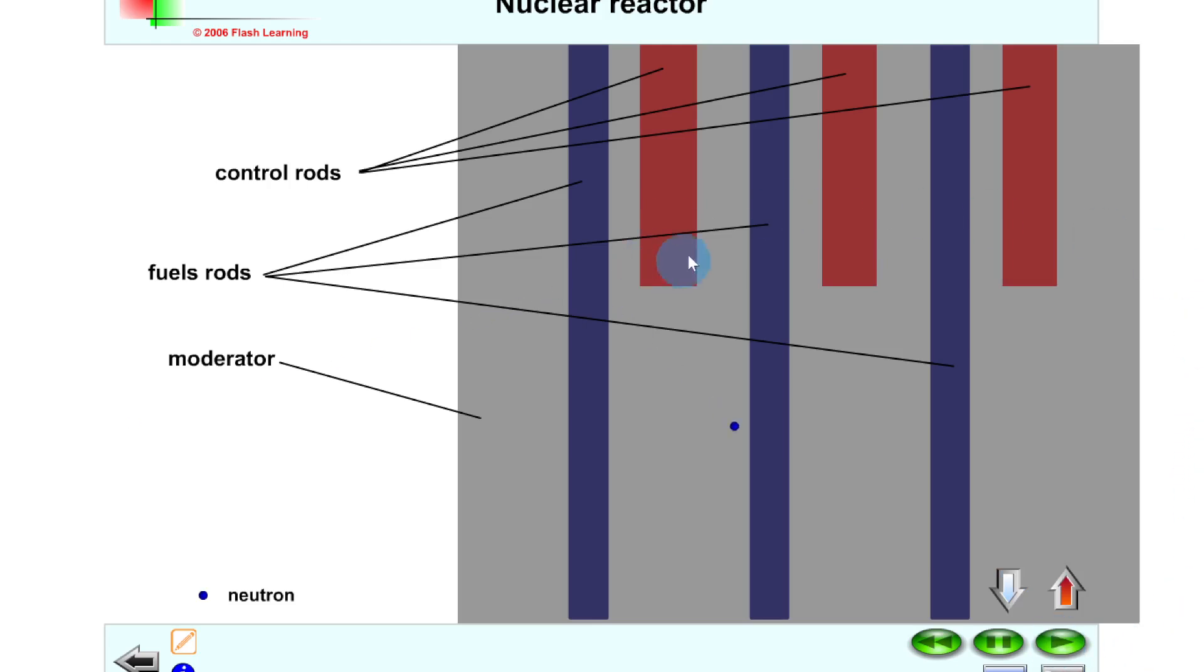Which means that it can no longer go on and cause further fission reactions. So that's about half of our number of neutrons that we had initially being released. Or if we wanted to stop the entire process, we could move the control rods all the way down and click play, and you'll see that the neutrons can no longer go on. They're just being absorbed by the control rods there.